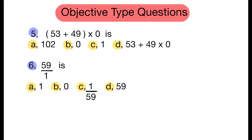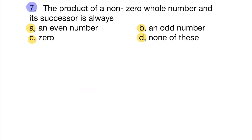Objective type questions. Fifth question: 53 + 49 × 0 = 0, because any number multiplied by 0 gives 0. Sixth question: 59 ÷ 1 = 59, because any number divided by 1 is that number.